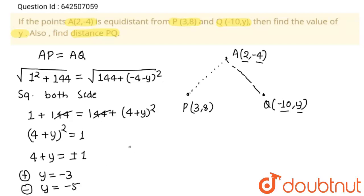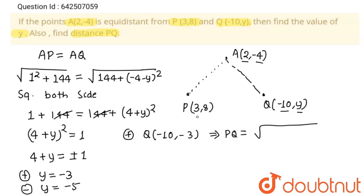So there are two values of y. Now I have to find distance PQ. First, using the plus sign result, y = -3, so coordinates of Q are (-10, -3). Using the distance formula: PQ = √[(3 - (-10))² + (8 - (-3))²] = √[13² + 11²] = √[169 + 121] = √290.